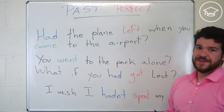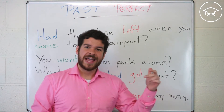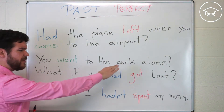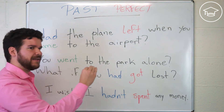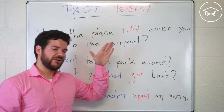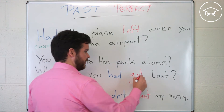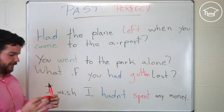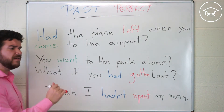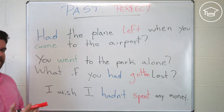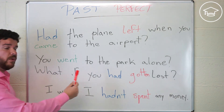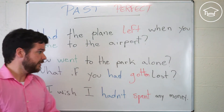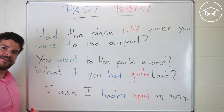The past perfect is also used a lot for hypothetical situations. You went to the park alone — 'What if you had gotten lost?' In American English it's 'got' (third column), in British English it's 'gotten.' The correct question form in simple past is 'Did you go to the park alone?' But for hypotheticals: 'What if he had gotten lost?' — it didn't happen, but what if it had?